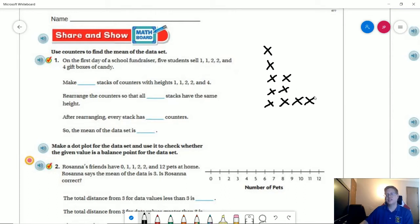Looking at this picture, we can already tell that if we wanted to make it even, we're going to have to get rid of these two and move each of these to their own respective group of one to make a group of two. We are going to make five stacks of counters to start with and rearrange the counters so that all the stacks have the same height. After arranging, each stack is going to have two counters, and so the mean is going to be two.